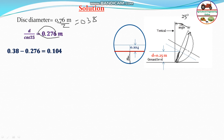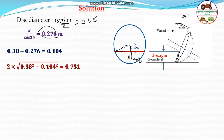The projected depth d-dash is 0.276 meters, and radius minus d-dash gives 0.104 meters. Using a right-angle triangle where the height is 0.104 and the hypotenuse is r = 0.38, the half chord length equals the square root of (0.38² minus 0.104²). Multiplying by 2 gives the full chord length of 0.731 meters.